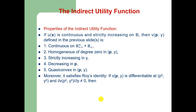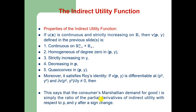Moreover, it satisfies Roy's identity. If the indirect utility function is differentiable at P0 and Y0, and the partial derivative of the indirect utility function at P0 and Y0 with respect to Y is not equal to zero, then the demand function for good i as a function of P0 and Y0 equals the negative of the partial derivative of the indirect utility function with respect to Pi divided by the partial derivative of the indirect utility function with respect to income. This says that consumer demand for good i is simply that ratio after a sign change.